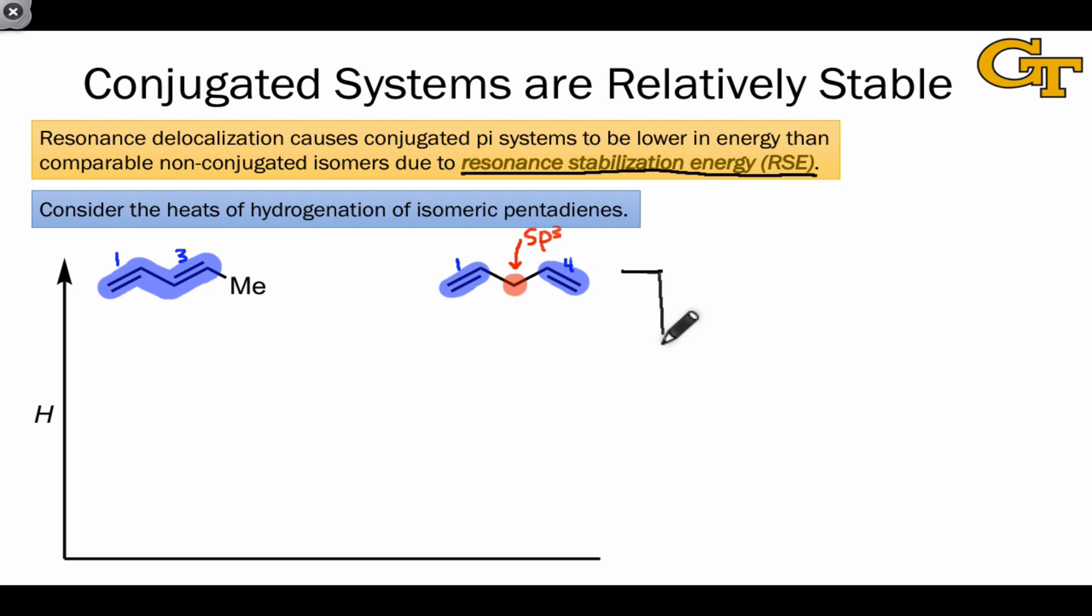Hydrogenation of each of these pentadienes is going to lead to the same product. Two equivalents of H2 will be incorporated into them, and we'll end up with pentane. Let's put pentane at the zero line on this energy diagram.